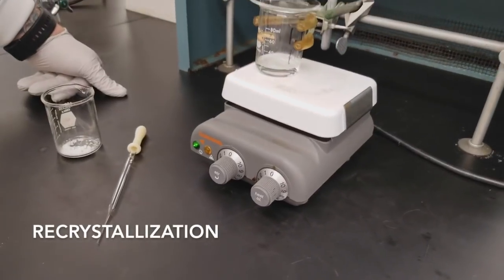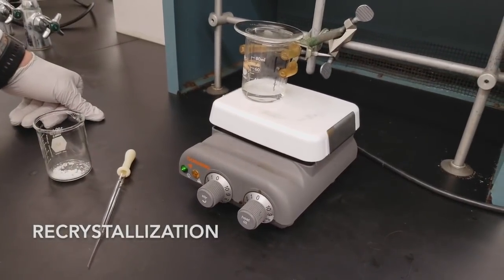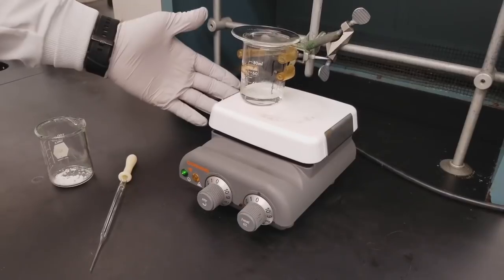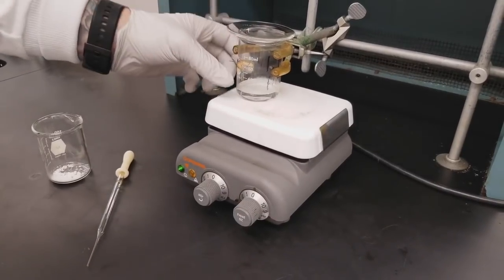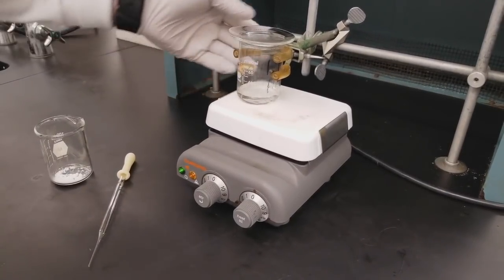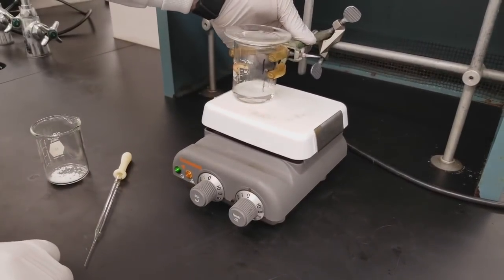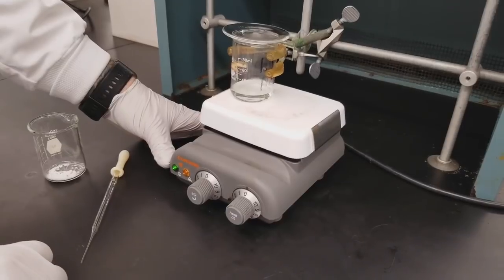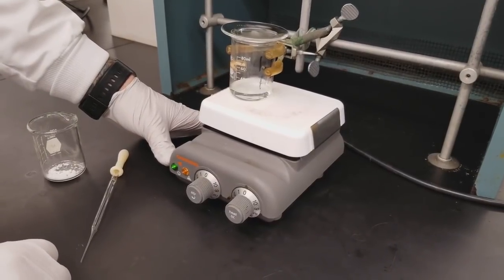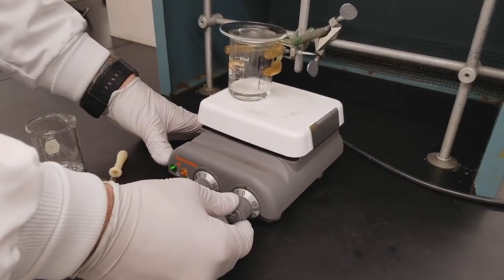We're going to detail how to do a recrystallization in this video. So we have our recrystallization solvent on a hot plate. It is clamped to a ring stand and so it is in a beaker with a watch glass on top. It's important to have this clamped so that we don't accidentally knock it over and send solvent flying.